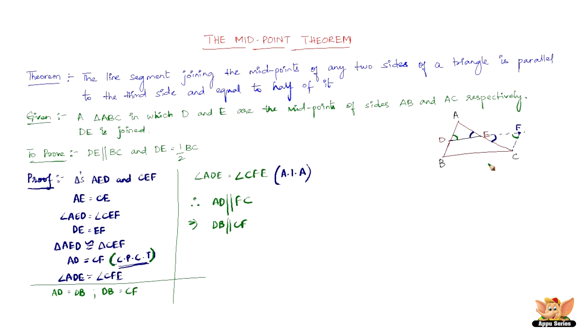So from statements 3 and 4, we have DB equal to CF and DB parallel to CF, which says that DBCF is a quadrilateral such that one pair of sides are equal and parallel to each other. Therefore, we can declare now with adequate proof that DBCF is indeed a parallelogram.